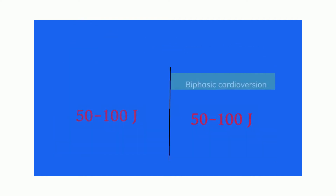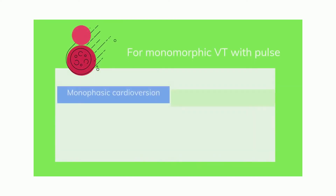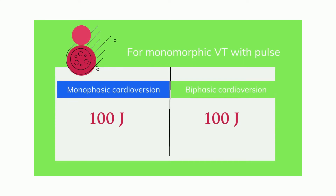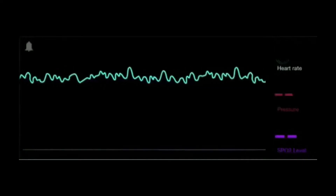In case of monomorphic ventricular tachycardia with a pulse, for both monophasic and biphasic cardioversion, an initial dose of 100 joules of energy is required. The dose can be escalated in a stepwise pattern if no response is elicited in the first attempt.